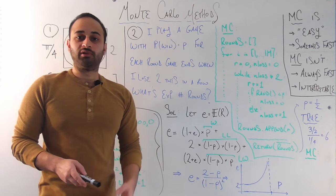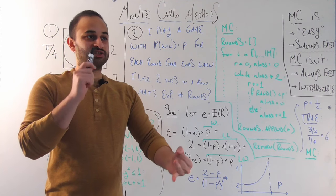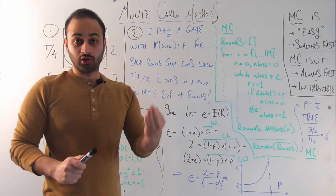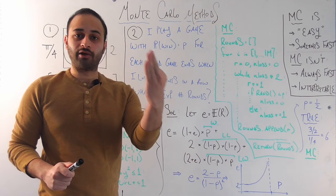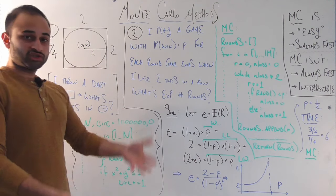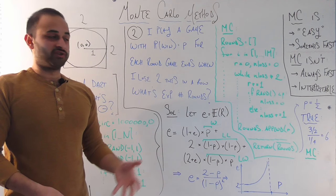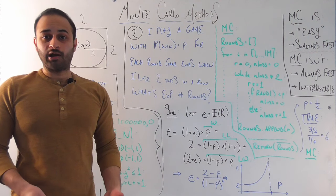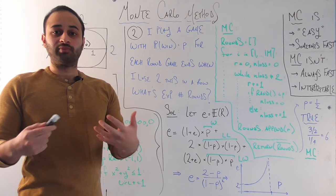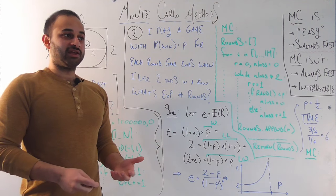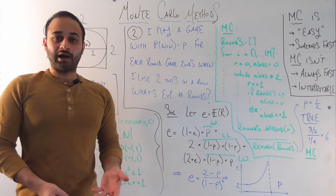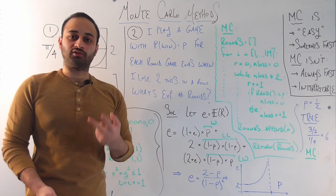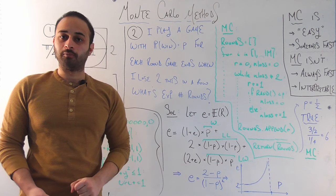This game ends when I lose two times in a row. For example, if I play the first round and win, then lose the second, then lose the third, the game is over and I've played three total rounds. The question is: if this is how the game works, what is the expected number of rounds that I'm going to play? In other words, on average, how many rounds of this game do I play until I get those two losses in a row?